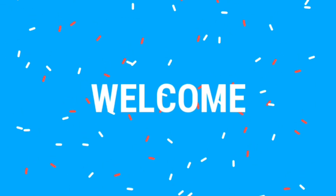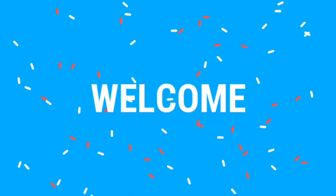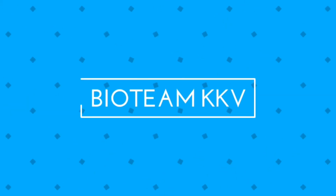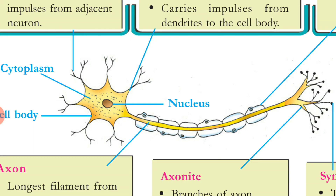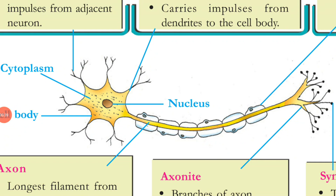Hi children, welcome back. In the previous class we have learned about the structure of neuron or nerve cell. Today we are going to study about the structure and function of myelin sheath. In the last class you learned that there is a protective covering around the axon which is made of Schwann cells. Now let's see the detailed structure of this covering, and whether there is any other type of covering seen around the axon, and what the real function of this covering is.